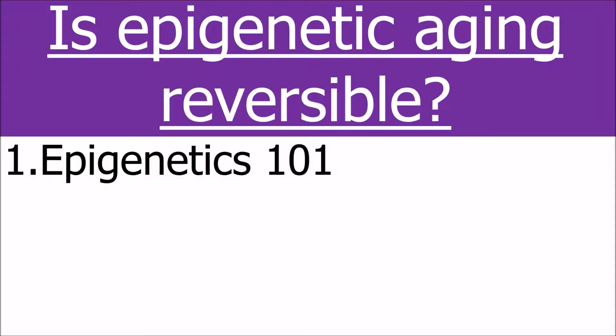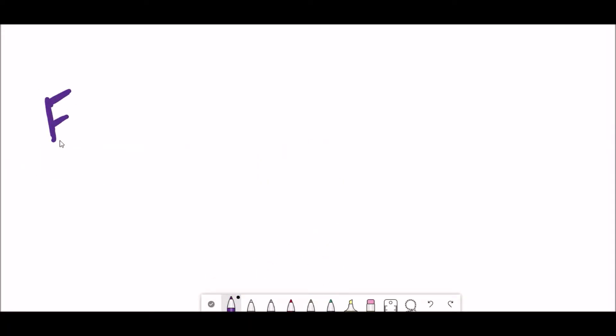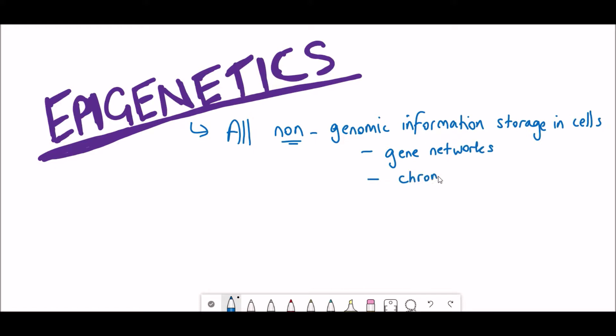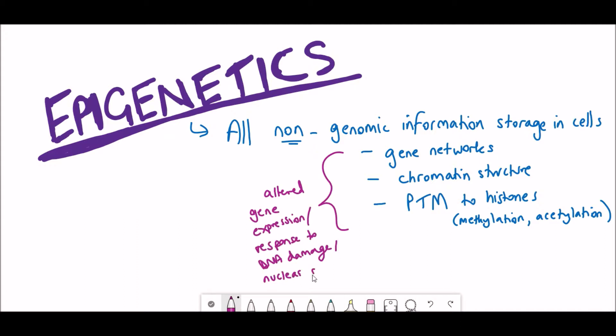So firstly, what is epigenetics? There are many definitions, but in my mind epigenetics includes all non-genomic information storage in cells. This includes understanding gene networks in which genes are expressed, chromatin structure, and also the post-translational modifications, or PTMs, to histone proteins. These modifications can involve methylation or acetylation. Histone proteins are proteins that DNA is wrapped around, and that creates chromatin and makes up your nucleus.